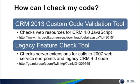So how can we find all of these customizations? If you're coming from CRM 2011, there are two tools you can run to search it out for you. The Custom Code Validation tool checks your web resource files for any legacy JavaScript and highlights them in red for you — it won't rewrite it, but it'll point you to where to go. The Legacy Feature Check tool does a similar action on all of your server extensions and plugins, looking for legacy code that's no longer supported.